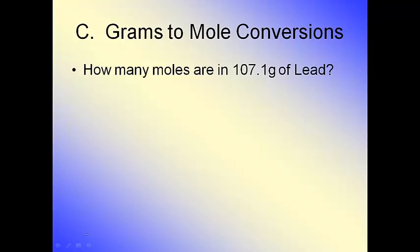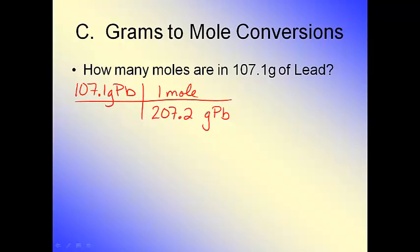So how many moles are in 107.0 grams of lead? Well, the process doesn't change no matter what you're going to do. The first thing you're going to do is you're going to write down your given, which is 107.1 grams of Pb. Set up your little conversion. I'm converting to moles. One mole goes on the top. I'm converting from grams of lead. Lead goes on the bottom. Now I go to the periodic table. I find lead, Pb. Lead is number 82. And it has a weight of 207.2 grams.